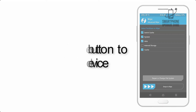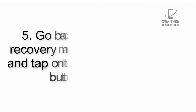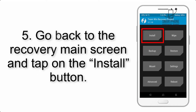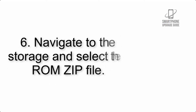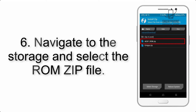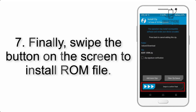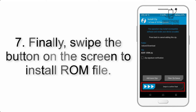Step 4: swipe the button to wipe the device. Step 5: go back to the recovery main screen and tap on the Install button. Step 6: navigate to the storage and select the ROM zip file. Step 7: finally, swipe the button on the screen to install the ROM file.